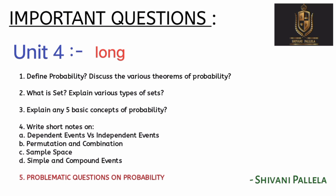Unit 4 long covers theory as well as problematic with equal importance. Questions 1 to 4 are theory important questions, and the 5th question is a probability problematic. For example: if a die is thrown 67 times, what is the probability of getting 6 numbers? Practice questions from the Pankaj Textbook — refer to that textbook and practice probability questions.